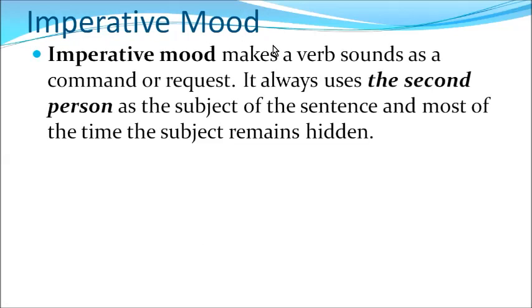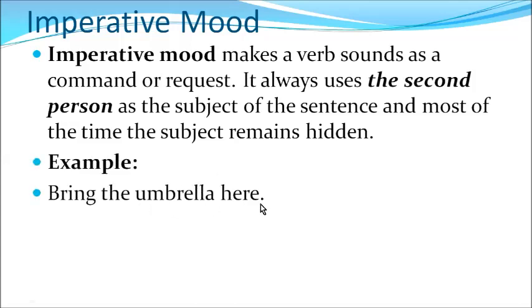Next comes imperative mood. Imperative mood makes a verb sound as a command or request. It uses the second person as the subject of the sentence, and most of the time the subject remains hidden. A command can be produced by the first person and received by the second person only, which is why the subject is always the second person.